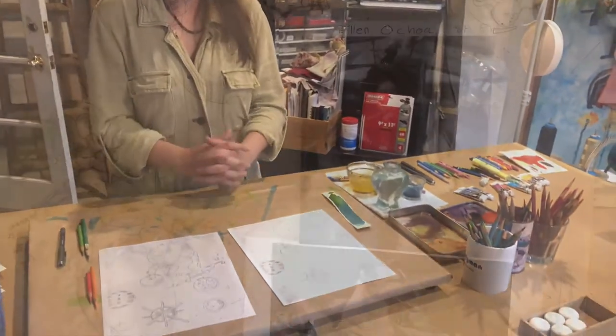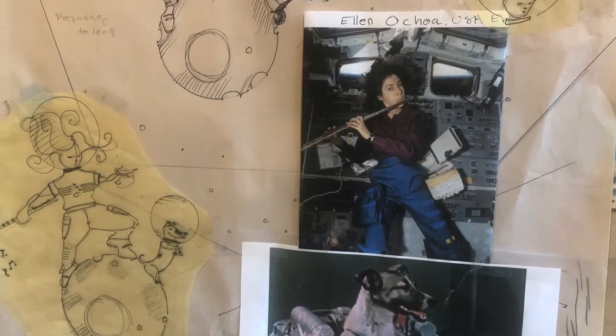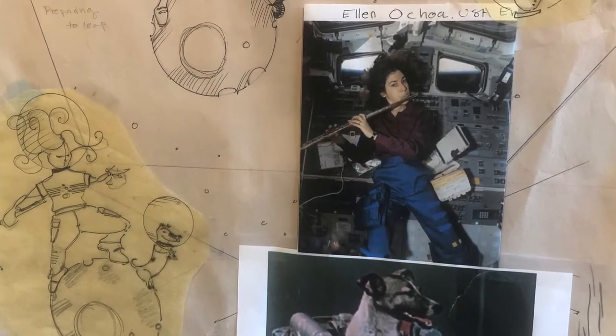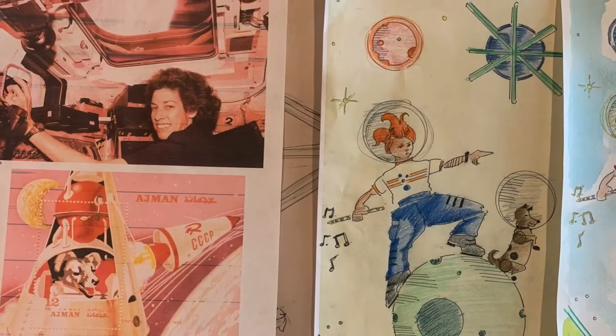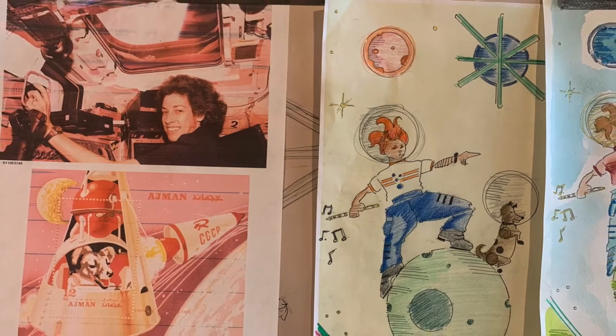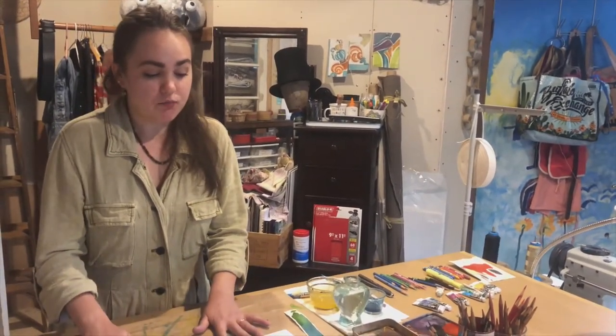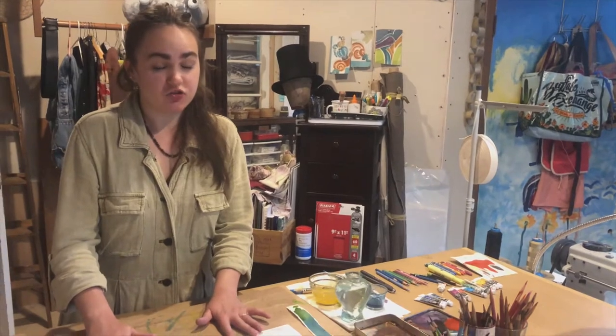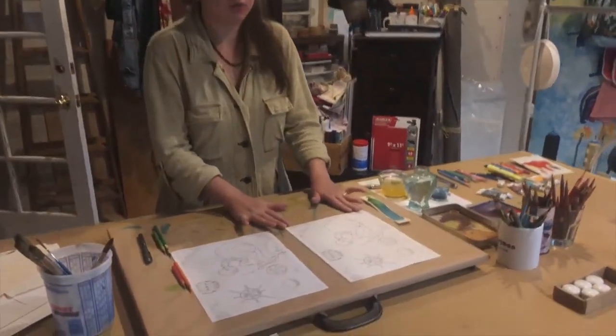All right, so today we're doing a coloring picture of Dr. Elena Ochoa who was the first Latina to go into space. She was an American engineer and with her I have imagined the Russian space dog Leika. So first off I printed the image onto a piece of lightweight watercolor paper which I will now paint.